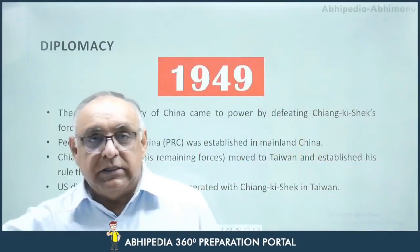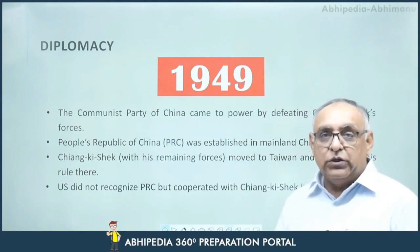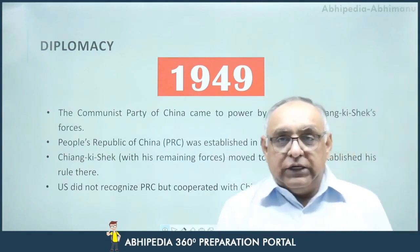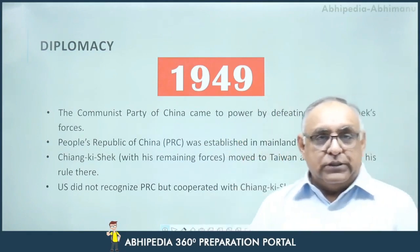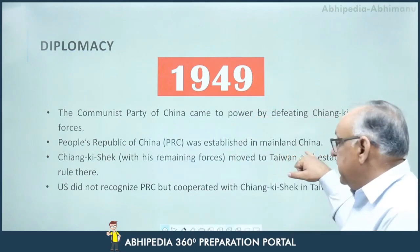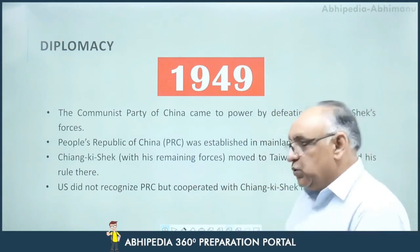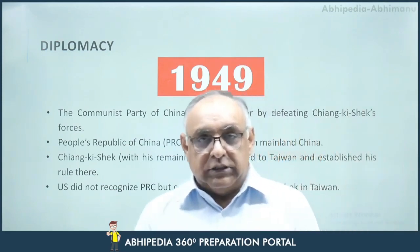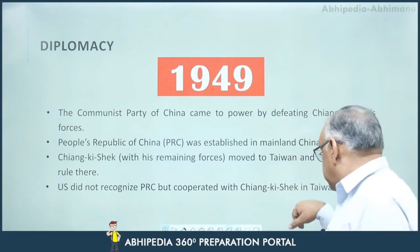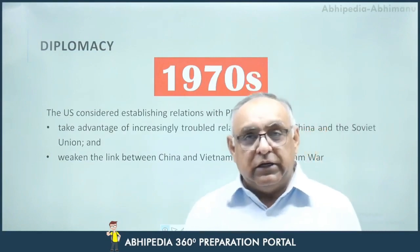As far as this example is concerned, in 1949, we all know that a revolution took place in China. The Communist Party of China came to power by defeating Chiang Kai-shek's forces, and the People's Republic of China was established in mainland China. Chiang Kai-shek with his remaining forces moved to Taiwan and established rule there. The U.S. didn't recognize the People's Republic of China, but instead cooperated with Chiang Kai-shek in Taiwan.